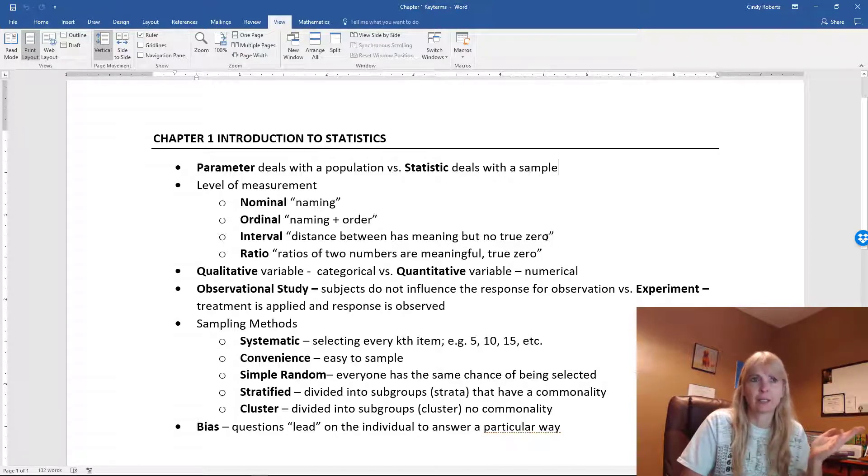So in other words, time would be interval data. Ratio - I always think of these as something can be twice as, like money. So you can have twice as much money as I have. But the top two are going to be your qualitative variables, categorical, and then the bottom two are going to be your numerical, quantitative: interval and ratio.